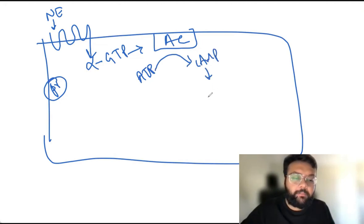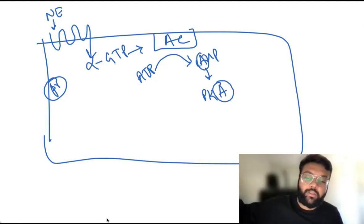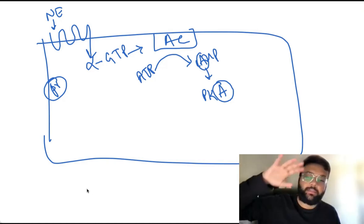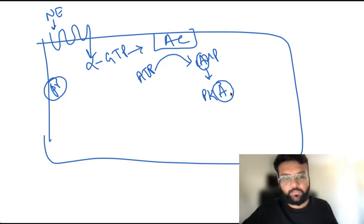Cyclic AMP being the second messenger, it will activate protein kinase A. Remember cAMP, protein kinase A, because we will be learning about different protein kinases, protein kinase C, protein kinase G.